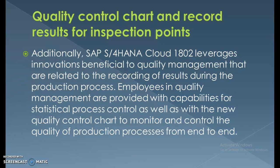Additionally, SAP S4 HANA Cloud 1802 delivers innovations beneficial to quality management, related to recording results during the production process. Employees in quality management are provided with capabilities for statistical process control, as well as a new quality control chart to monitor and control the quality of the production process from end to end. We can control everything in an organization — from financials to manufacturing to product quality — and enhance employee quality management using this latest release.